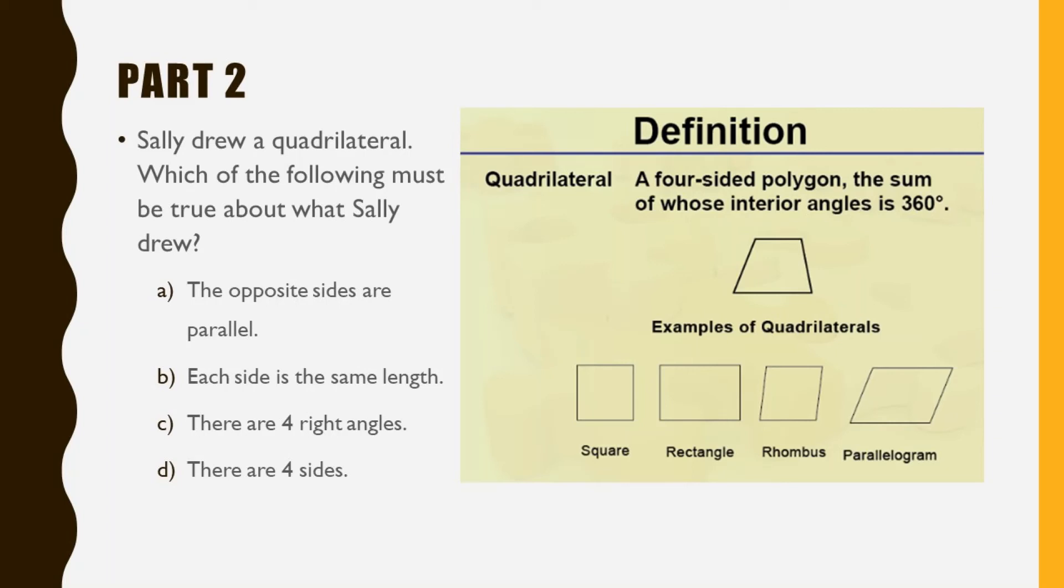Does each side have to be the same length? Again, it could. A square is a type of quadrilateral, but not all quadrilaterals are squares.